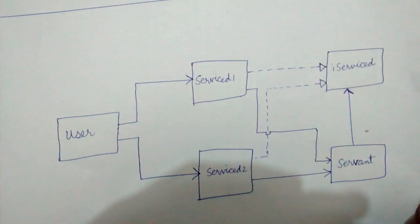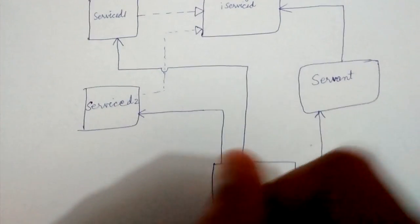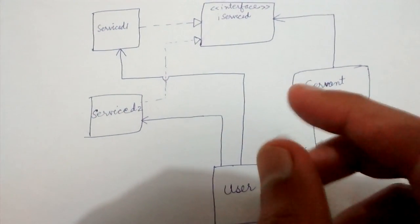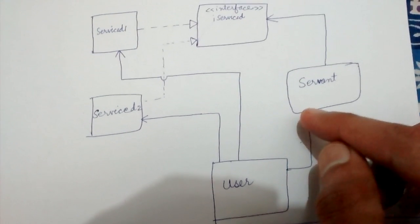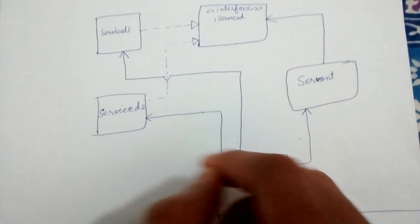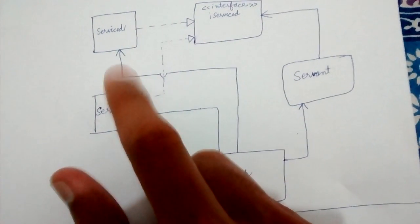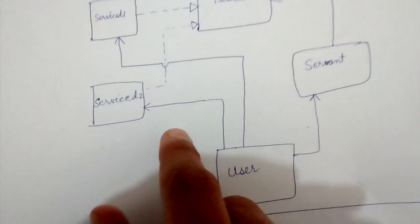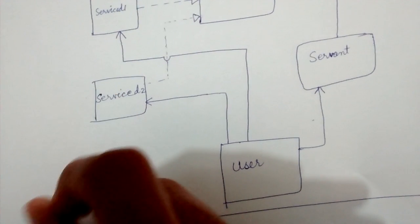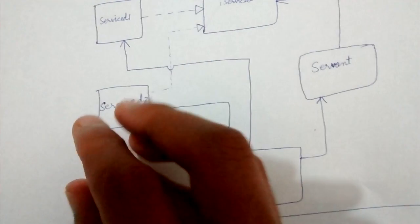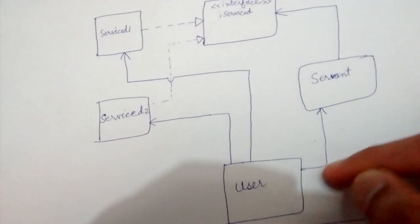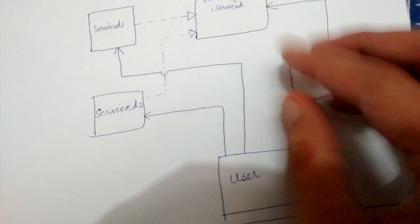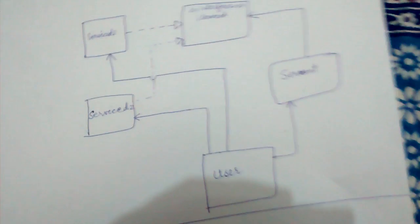The difference is that in the first implementation, the client or user is directly talking to the servant. The client knows about the servant and also has the serviced classes as dependencies. So if I want to move the rectangle, I should have Rectangle as a dependency. I am associated with Rectangle and Triangle, and I have a servant — I will ask the servant to move my rectangle, move the triangle, and so on.